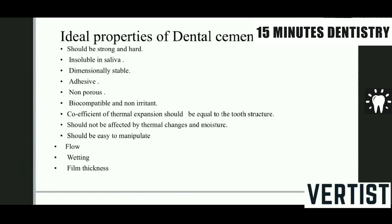Biocompatibility and the non-irritant property of cement is most important because it is placed close to the pulp — a vital part of the tooth — and close to the dentine. The coefficient of thermal expansion is also a critical property: all restorative materials should have a coefficient that allows them to expand and contract in line with the tooth, because a large disparity would cause a mismatch between the restorative material and the tooth. It should not be adversely affected by thermal changes and moisture.